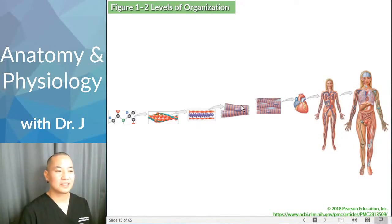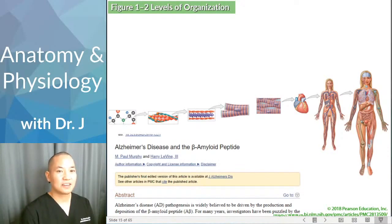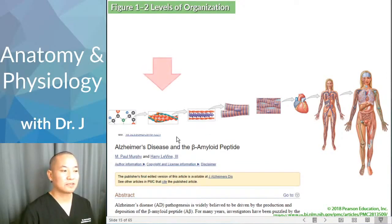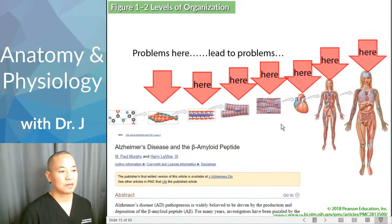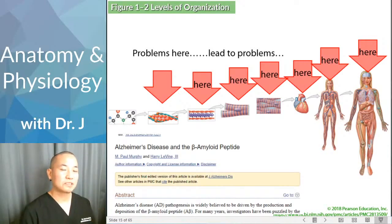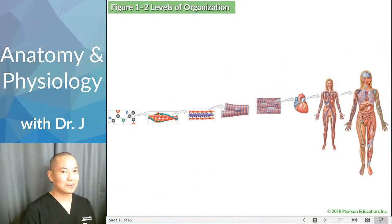Why does this matter? Consider Alzheimer's disease: one underlying cause involves beta-amyloid peptides — small fragments of proteins. This small chemical causes problems with neurons, which are cells, which then causes problems with tissues, which causes problems with the organ — the brain — leading to all the psychological and physiological problems of Alzheimer's disease. Something going wrong at the chemical or cellular level can affect tissue, organs, and the entire body.